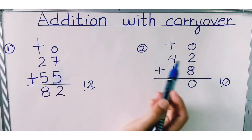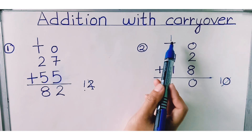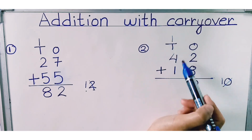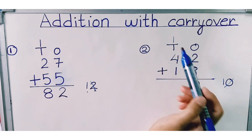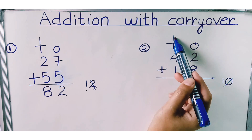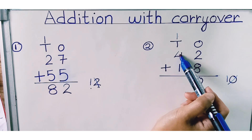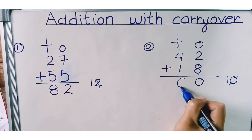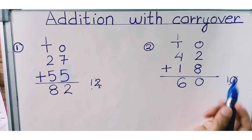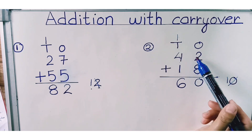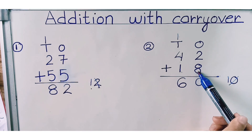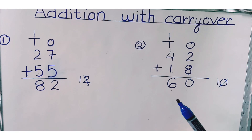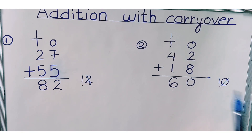Now let's add the numbers in tens place: one, four, and one. One plus four is five, and five plus one is six. So 60 is the correct answer — 42 plus 18 is equals to 60. This is how you do addition with carryover. Thank you.